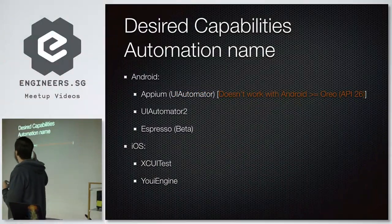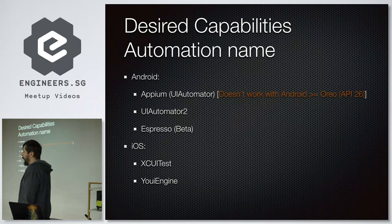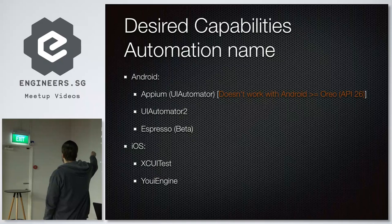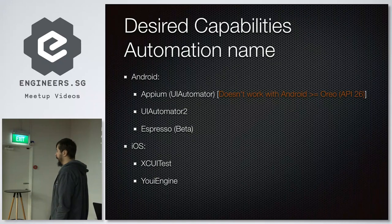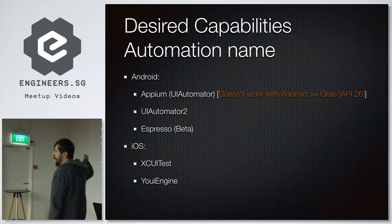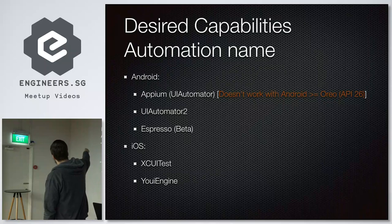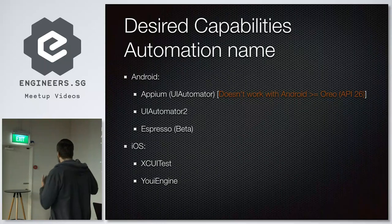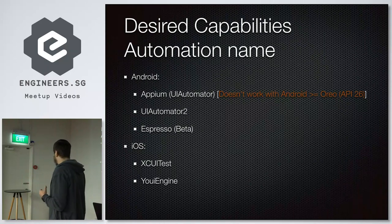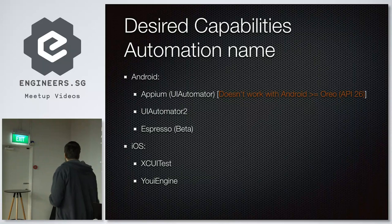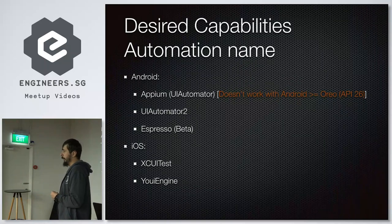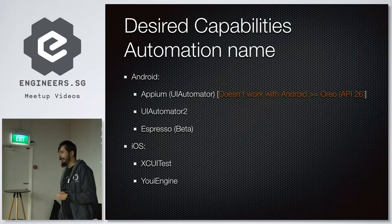One of the desired capabilities is automation name — the driver for automation. For Android, possible variants include the original UIAutomator driver (now outdated and won't work with Android 8), and UIAutomator2, which you should use for Android 8 and above (API 26+). There's also an Espresso driver, but it's still in beta so be careful about stability. For iOS, XCUITest is available for all applications, and UIEngine for apps developed with UIEngine.